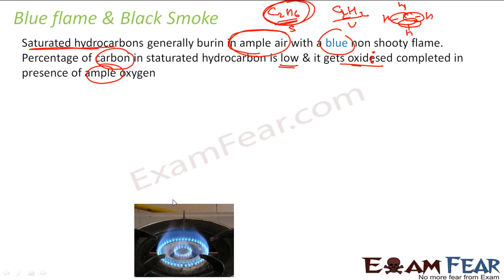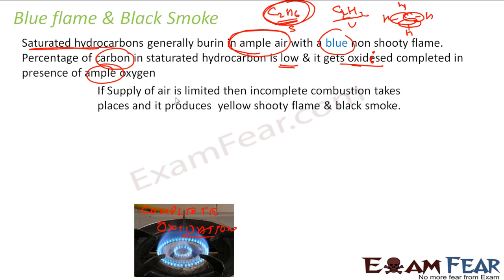If you have sufficient oxygen, the compound gets oxidized completely, giving blue flames — this is complete oxidation. But if you limit the supply of air, removing oxygen, even a saturated hydrocarbon will give a yellow flame and black smoke. You may have seen yellow flames from a gas stove and called the gas technician to clean it. That happens because the stove is not getting proper air, oxidation doesn't happen properly, fuel is wasted, and you get a yellow flame and black smoke.